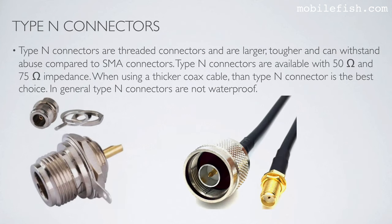Type N connectors are threaded connectors and are larger, tougher, and can withstand more abuse compared to SMA connectors. Type N connectors are available with 50 ohm and 75 ohm impedance. When using a thicker coax cable, the Type N connector is the best choice. In general, Type N connectors are not waterproof. This is a Type N male connector and this is a Type N female connector.